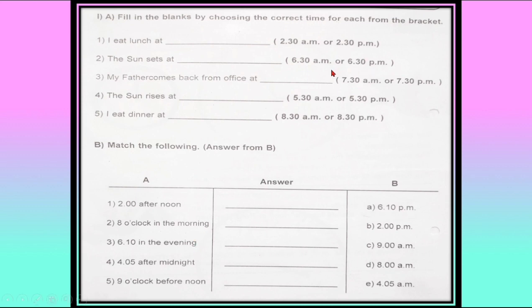The sun sets at 6:30 AM or 6:30 PM? It sets at 6:30 PM — in the morning it rises. My father comes back from office at 7:30 AM or 7:30 PM? 7:30 PM. The sun rises at 5:30 AM or 5:30 PM? 5:30 AM. I eat dinner at 8:30 AM or 8:30 PM? 8:30 PM.